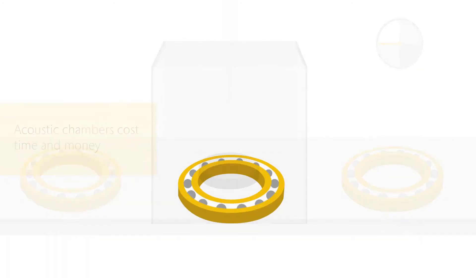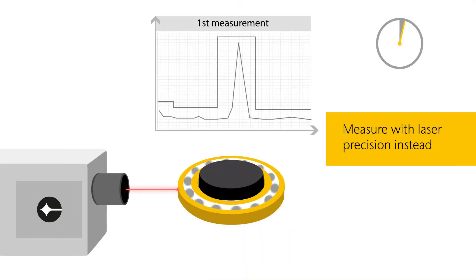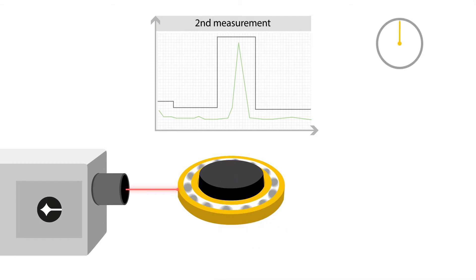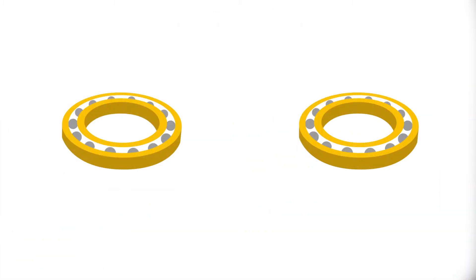The non-contact and precise laser measurement is the better choice. Polytech's industrial vibration sensors use the laser Doppler effect for ultra-precise measurements. This enables quick and reliable pass-fail decisions, especially in challenging production environments.